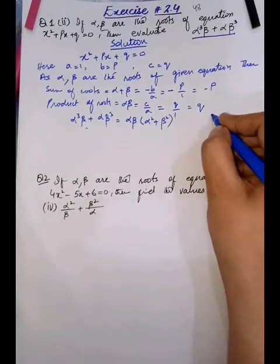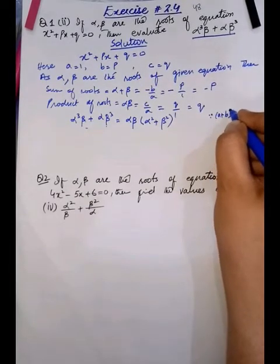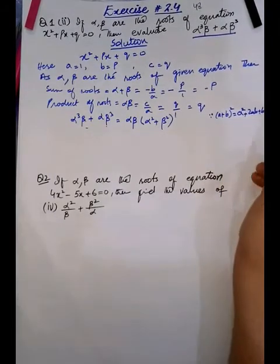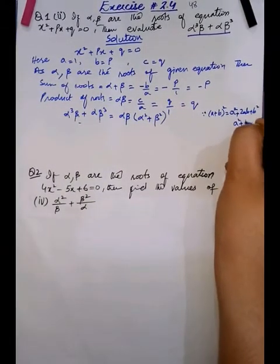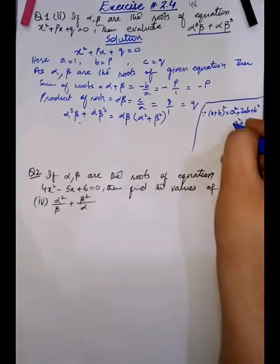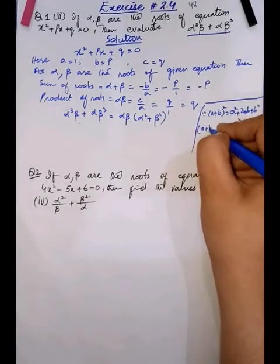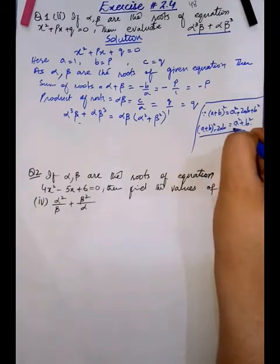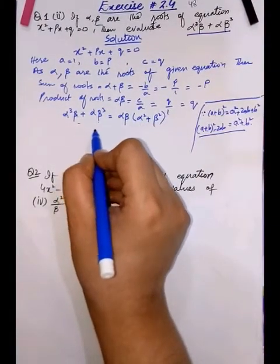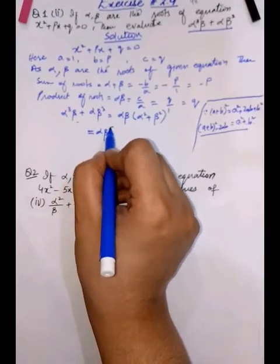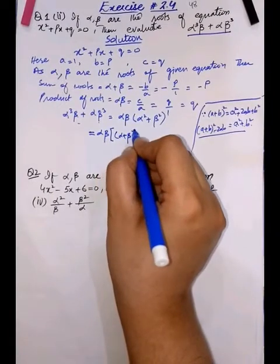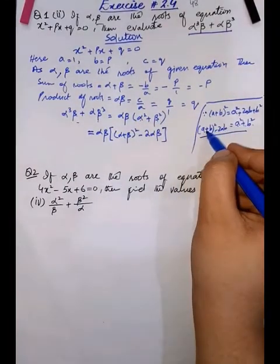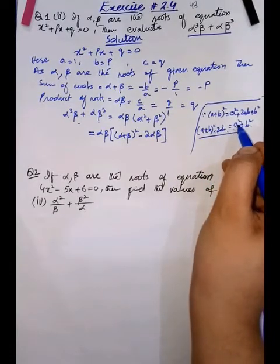Now, for alpha² plus beta², we derive it from the (A+B)² formula. (A+B)² = A² + 2AB + B², so A² + B² = (A+B)² − 2AB. Therefore, alpha² + beta² = (alpha + beta)² − 2·alpha·beta.